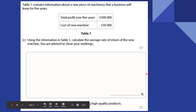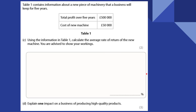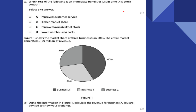Explain one impact on a business of producing high quality products. If a business is focusing on high quality products, they are going to generate a really good reputation, which will increase brand loyalty, and that's going to increase sales. Next: which of the following is an immediate benefit of just-in-time stock? It's got to be lower warehousing costs.